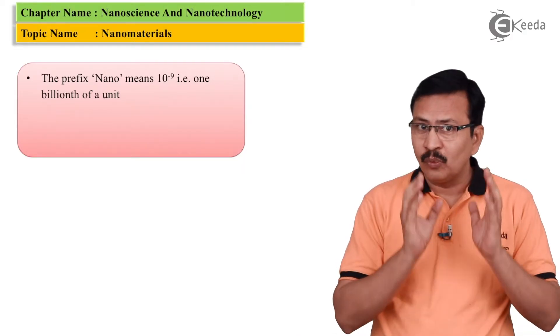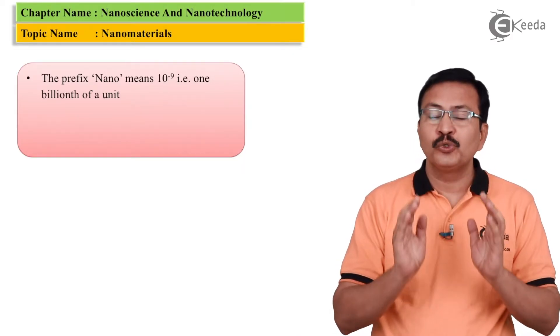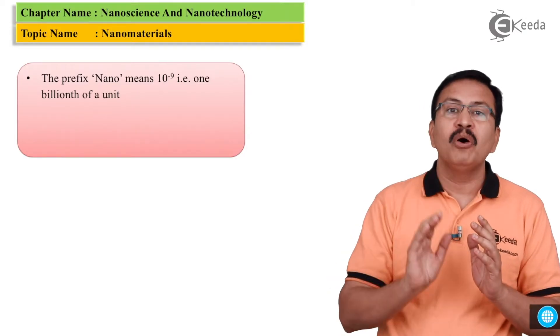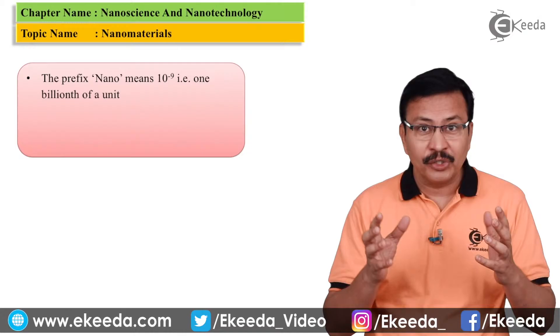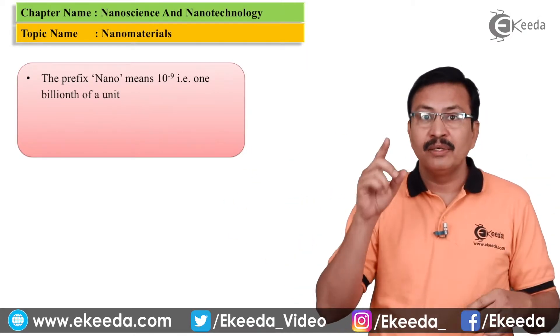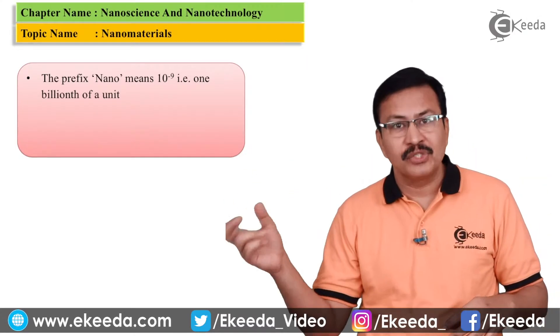As all of you know that the word nano corresponds to 10 raised to minus 9 of a unit. That is 1 billionth of a unit. How big is this 1 billion? It is 1 followed by 9 zeros.